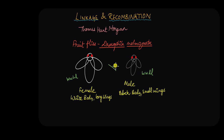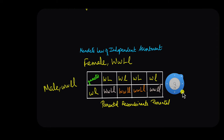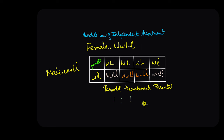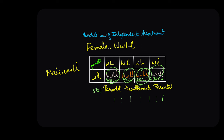In one of his experiments, he crossed these two types of flies and recorded his observations. He expected to observe offspring in the ratio 1:1:1:1 — 25% with white body and long wings, 25% with black body and small wings, 25% with white body and small wings, and 25% with black body and long wings. In other words, he expected 50% parental phenotypes and 50% recombinant genotypes and phenotypes, in accordance with Mendel's law of independent assortment.